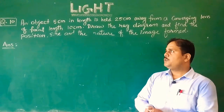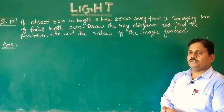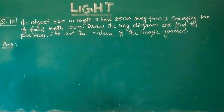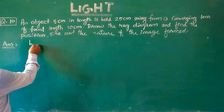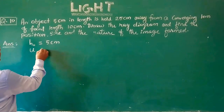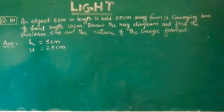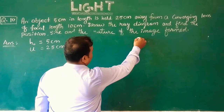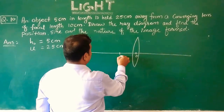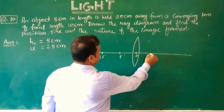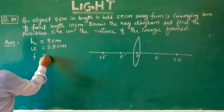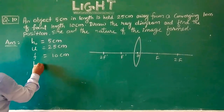Children, today I will discuss question number 11 of the Light chapter, that is NCERT question number 10, chapter end. An object is 5 centimeter in length and it is 25 centimeter away from a converging lens. Here is the optical center, this is the focus, this is 2F, and the focal length F is given as 10 centimeter. We have to find the height of the image and its position.